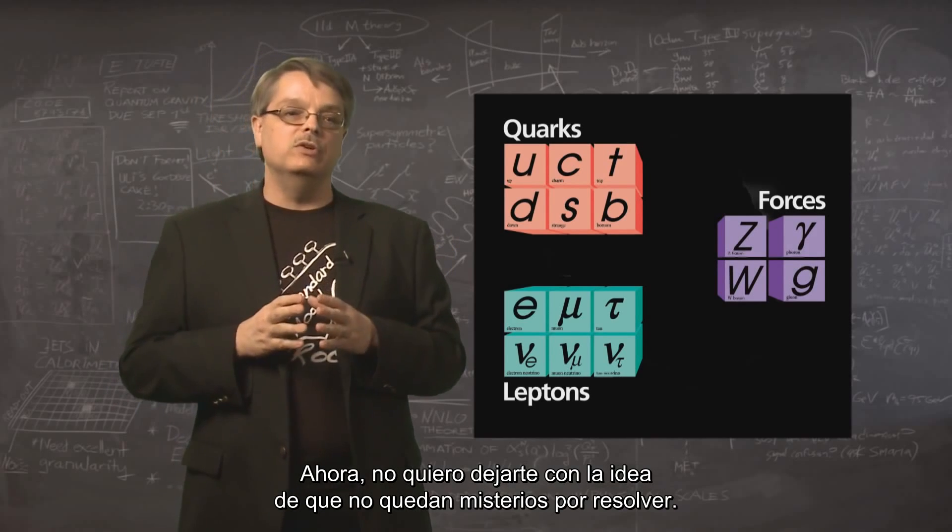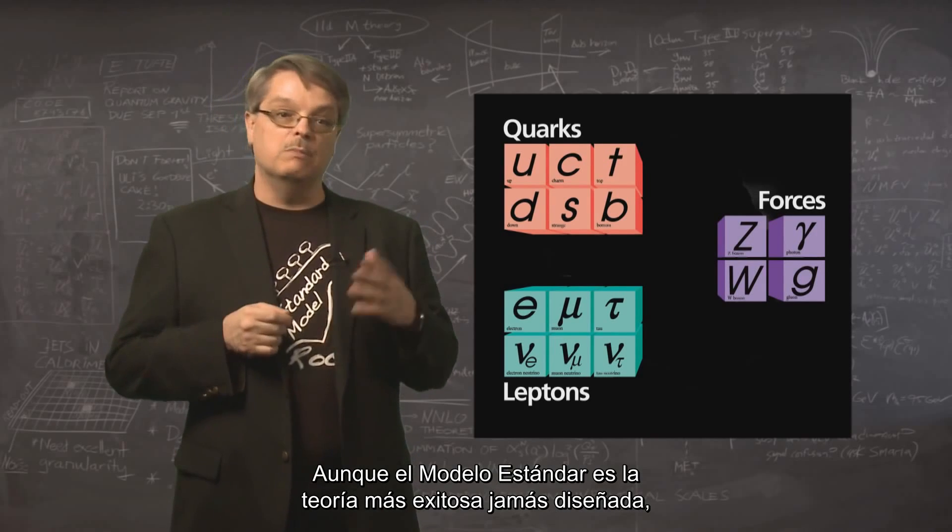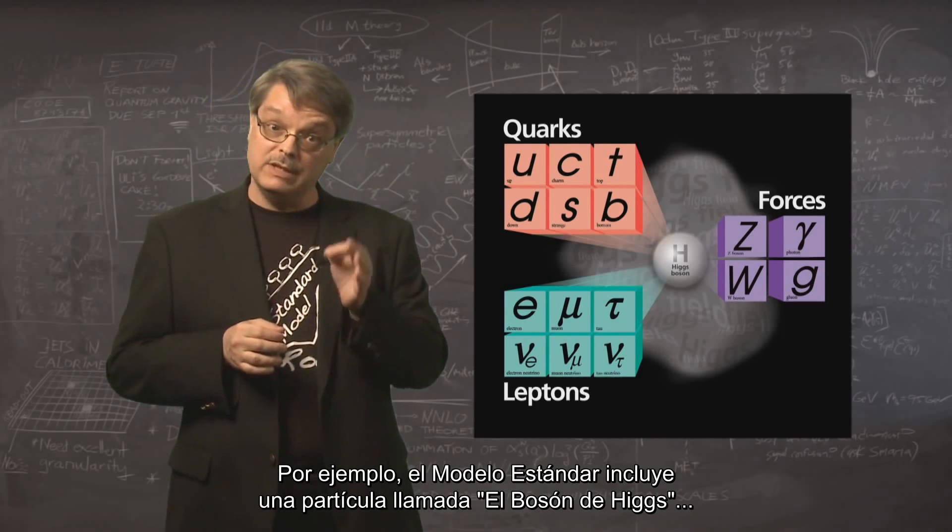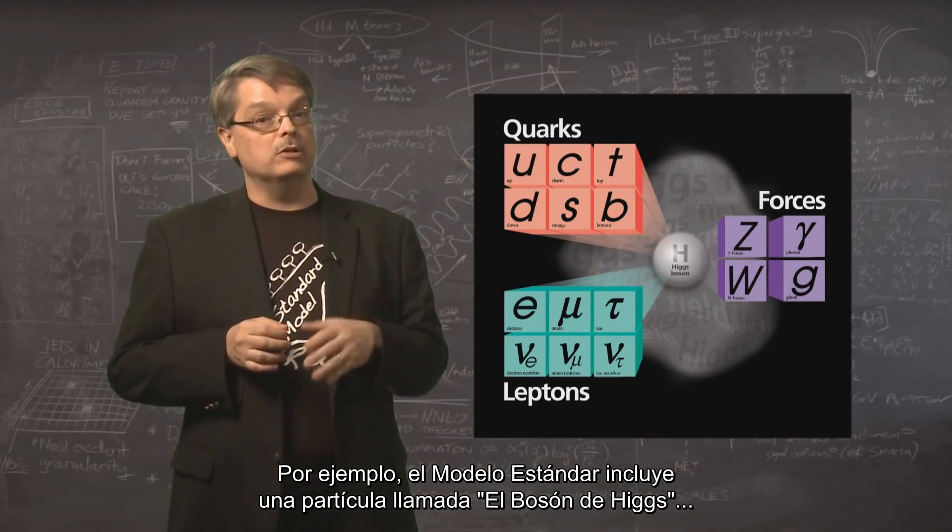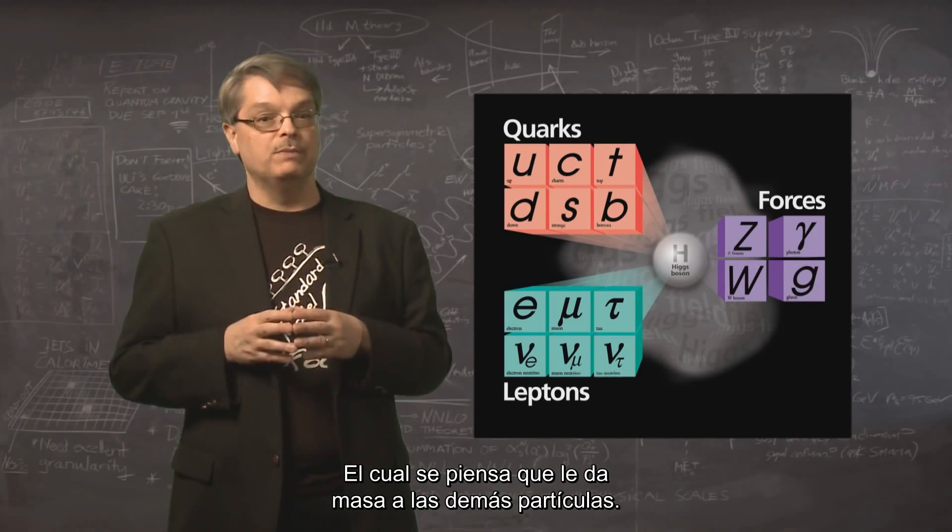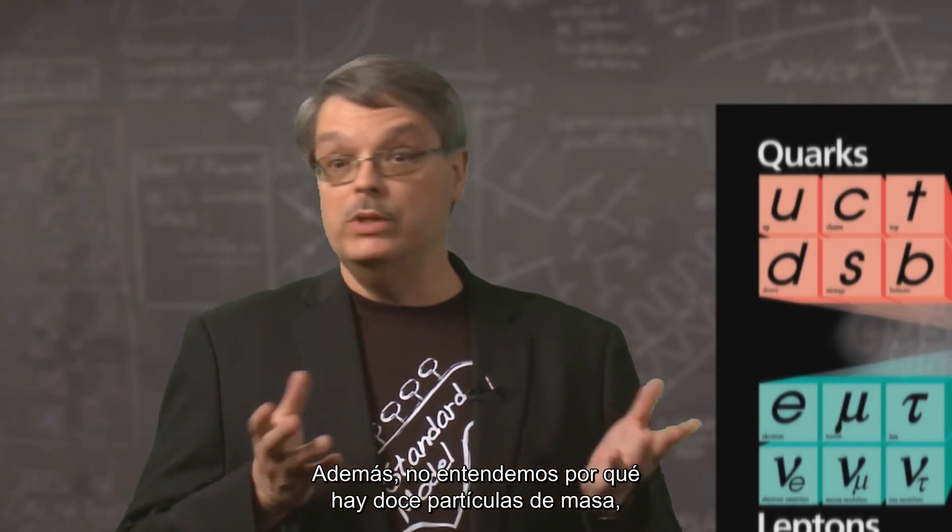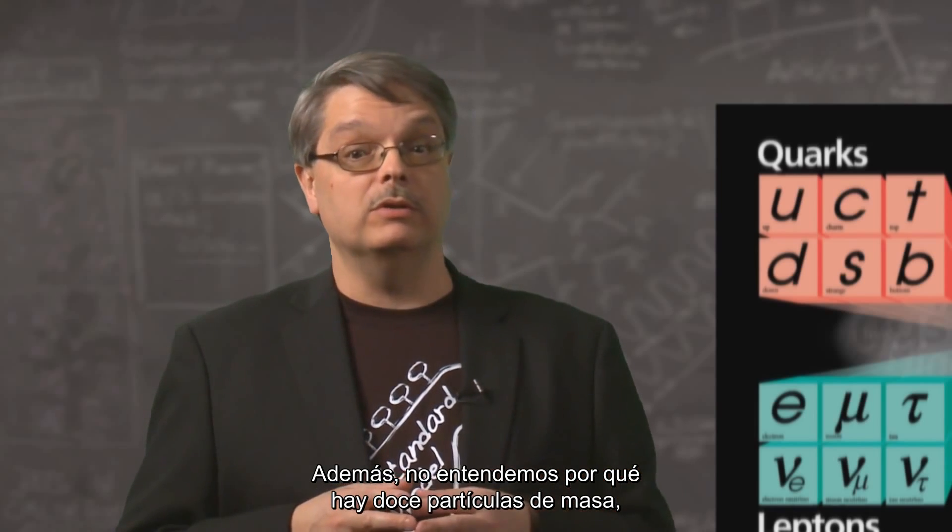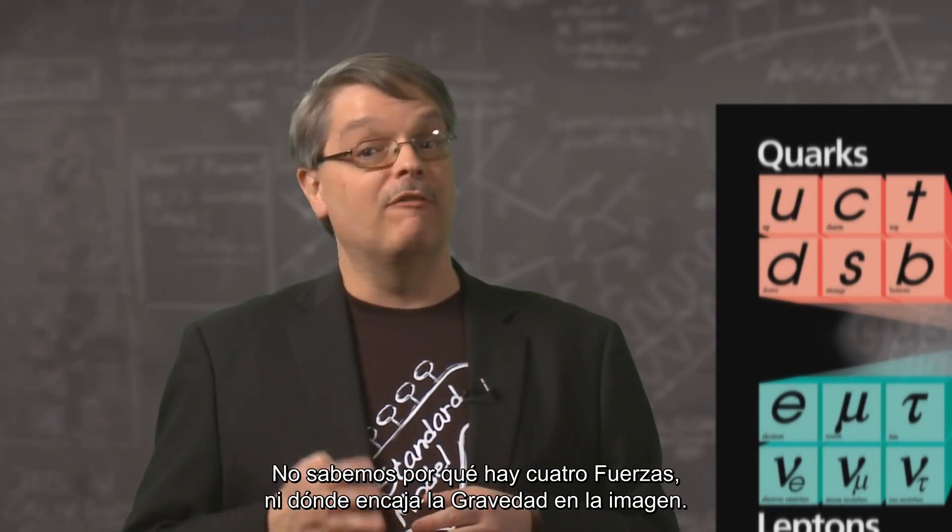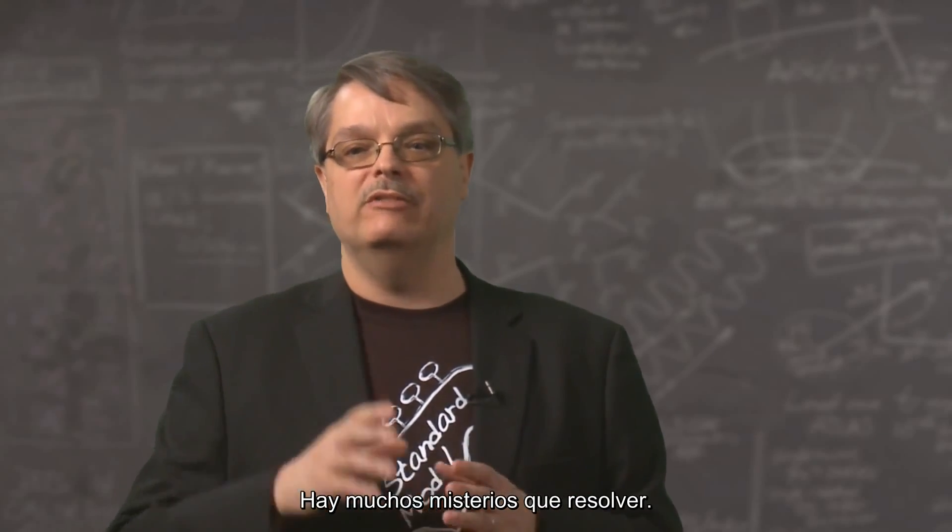Now, I don't want to leave you with the idea that there are no mysteries left to solve. While the standard model is the most successful theory ever devised, there are still frontiers to explore. For instance, the standard model includes a particle called the Higgs boson, which is thought to give mass to the other particles. We still have a lot to learn about the origins of mass. Further, we don't understand why there are twelve matter particles, and why the quarks and the leptons are different. We don't know why there are four forces, and where gravity fits into the picture. There are plenty of mysteries to solve.